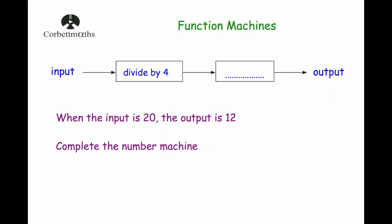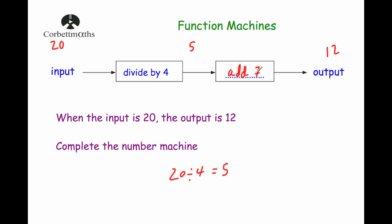Our second example says: input, divide by 4, then blank, then output. When the input is 20 the output is 12 — complete the number machine. Starting with 20, we divide by 4: 20 divided by 4 is 5. So after the first step we have 5, and we need to reach 12. To get from 5 to 12, the simplest option is add 7, so we write add 7.